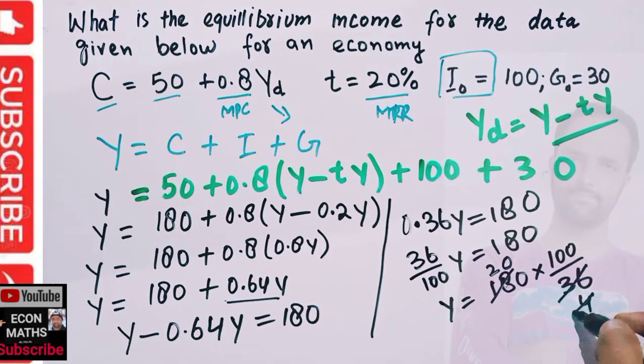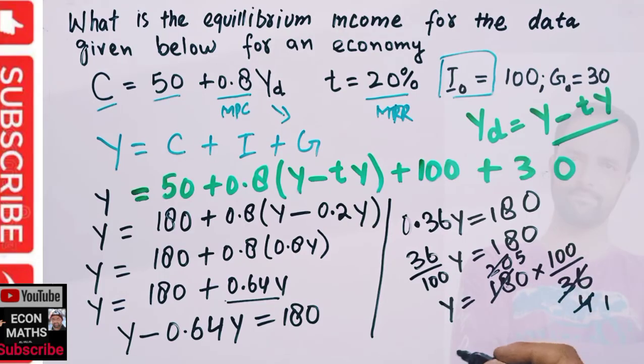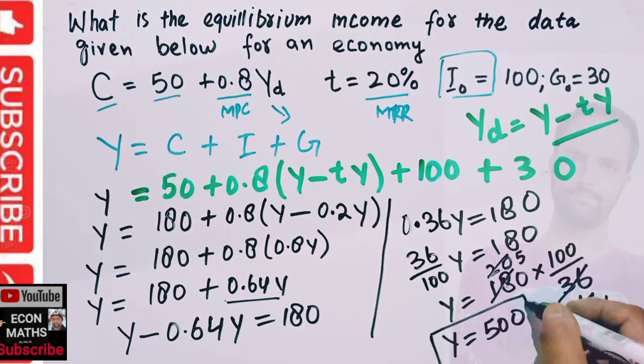Then we have 0, 4 ones are 4, 4 fives are 20, so we have 5 × 100 = 500. That means Y = 500. Our equilibrium level of income will be 500.